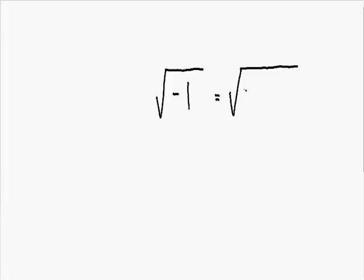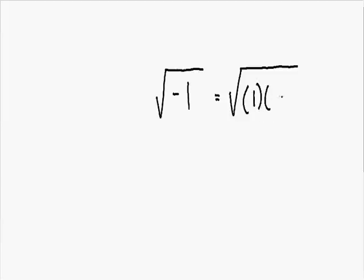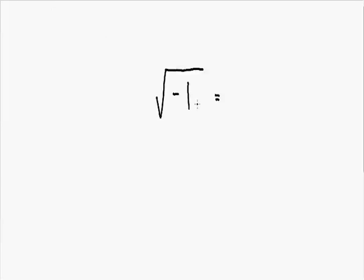We'll start with negative 1. Multiplied by itself, negative 1 times negative 1 gives us positive 1, which is not okay because we need negative 1. So let's try another number — positive 1. Positive 1 times positive 1 is also equal to positive 1, which is not okay either. I think many of you get the idea that it's impossible to find some number multiplied by itself that gives us a negative 1. It's impossible to square any number and get a negative value.